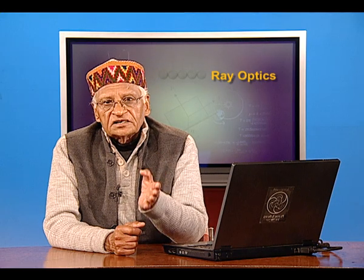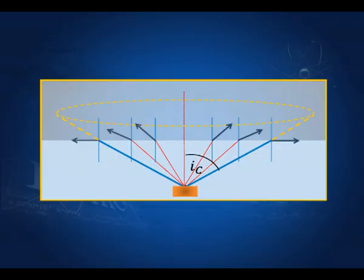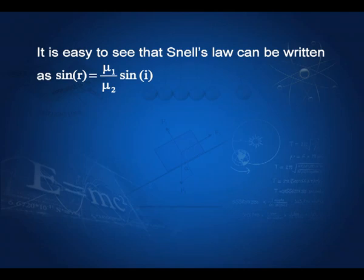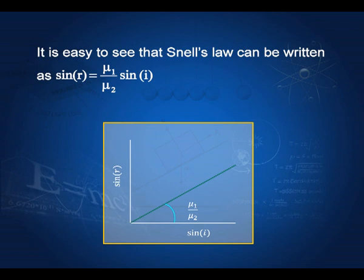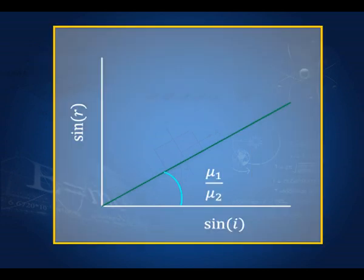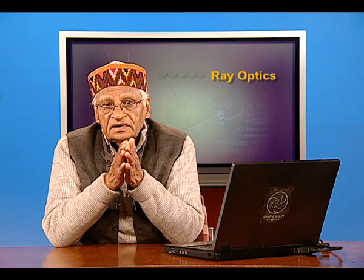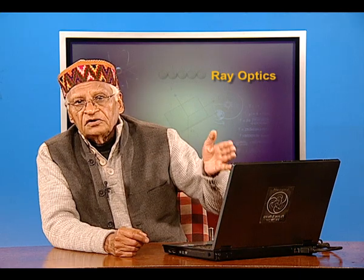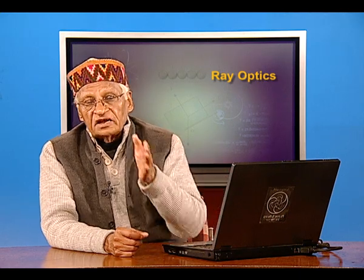Total internal reflection has another interesting aspect: if there is a treasure at the bottom of a pond, you can only see it through a specific cone defined by the critical angle. From Snell's law, writing sin r = (μ₁/μ₂) sin i and plotting sin r against sin i gives a straight line with slope μ₁/μ₂ — another method of finding the refractive index. In the next lecture, we shall continue with reflection from spherical surfaces.